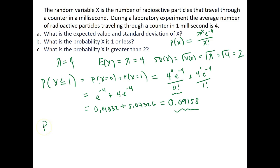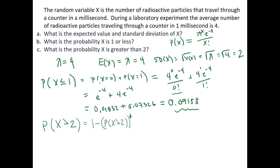For the last problem: what is the probability that x is greater than two? That means x equals three, four, five, six, and all the way up to infinity. We can't solve this by summing infinitely many terms, so we take the complement: one minus P(x ≤ 2). The complement equals one minus [P(x = 0) + P(x = 1) + P(x = 2)], covering all values not greater than two.